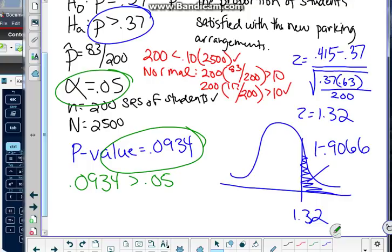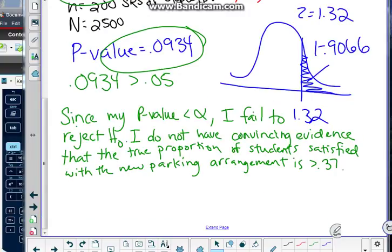So take a moment. Pause the video. Get caught up. Write out your fail to rejection statement. And then compare it with mine. Okay. So my interpretation of this, since my p value is not less than alpha, it's greater than alpha, I fail to reject the null hypothesis.